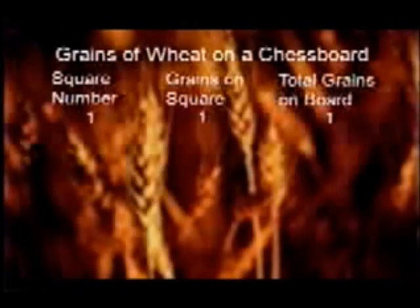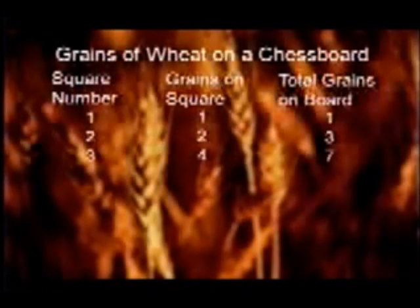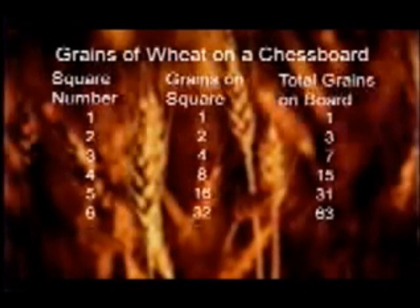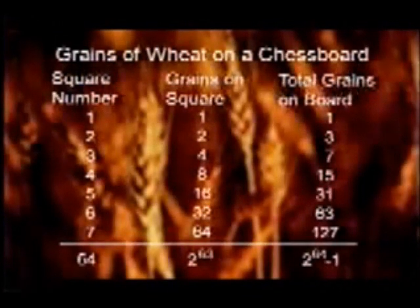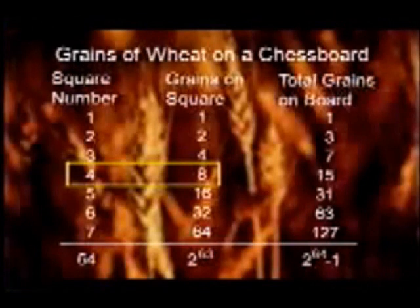Let me give you an example to show the enormous numbers you get with just a modest number of doublings. Legend has it that the game of chess was invented by a mathematician who worked for a king. The king was very pleased and said, 'I want to reward you.' The mathematician said, 'My needs are modest — please take my new chessboard and on the first square place one grain of wheat, on the next square double the one to make two, on the next square double the two to make four, just keep doubling for every square — that will be an adequate payment.' The king thought, 'This foolish man — I was ready to give him a real reward and all he asked for was just a few grains of wheat.'